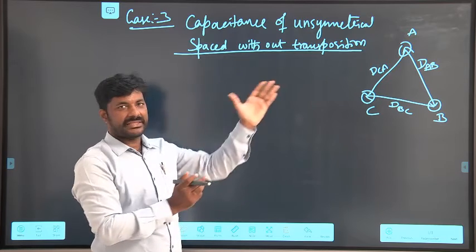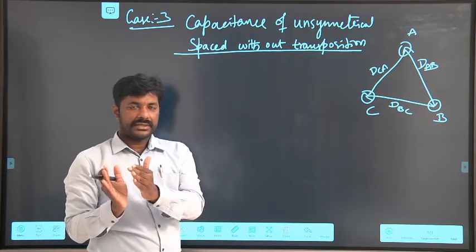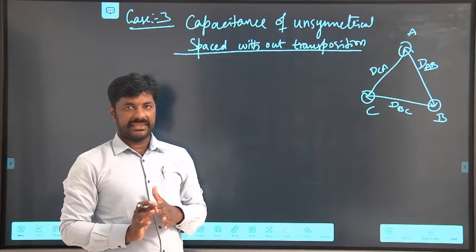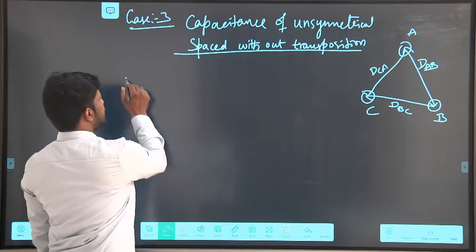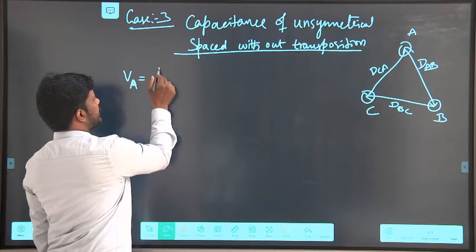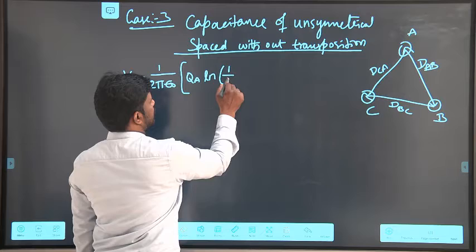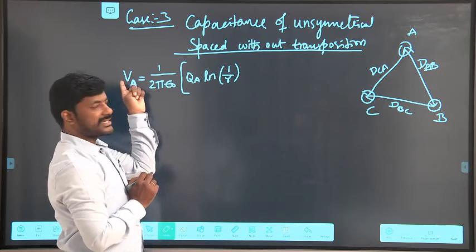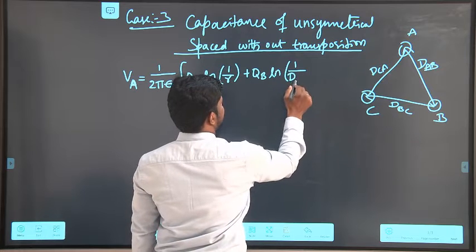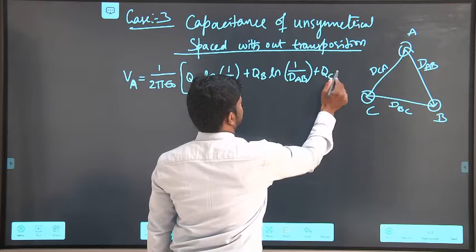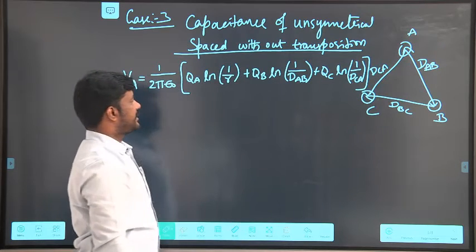The derivation is a little lengthy but if you concentrate point by point it is very easy. For these three conductors, the first step is to write the potentials of those conductors due to the charges QA, QB, QC. We will consider conductors A and B and find potentials VA and VB, simplifying to a single term called the capacitance of conductor A, CA. So VA is equal to 1/(2π ε₀) of QA ln(1/R) + QB ln(1/D_AB) + QC ln(1/D_CA).